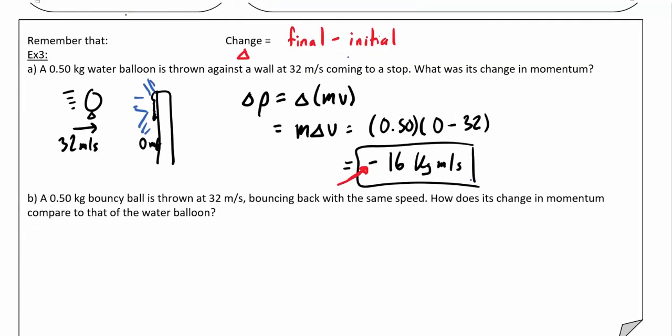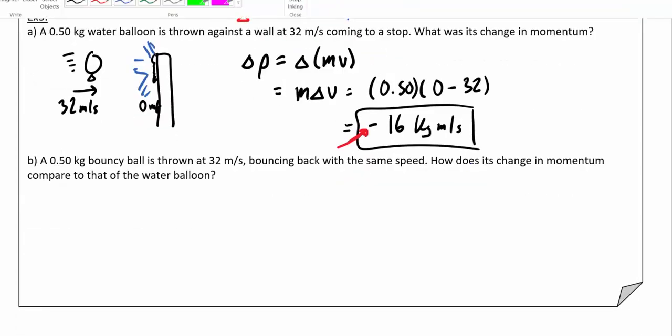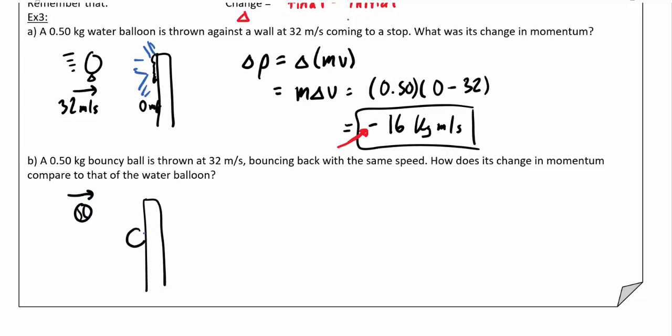Now as a comparison, what would happen if you were to throw a bouncy ball against the wall? Think about the same situation—somehow this bouncy ball has exactly the same mass as that balloon, but when it hits the wall, it's going to bounce back at essentially the same speed. So while it's traveling towards the wall at 32 m/s, it's going to bounce back also at 32 m/s.